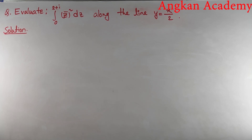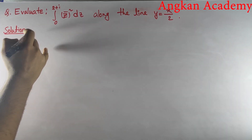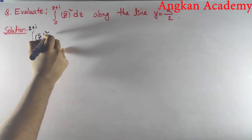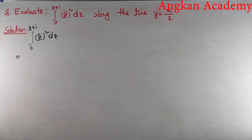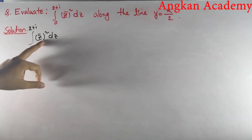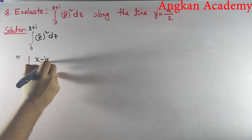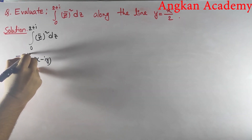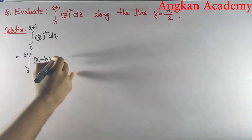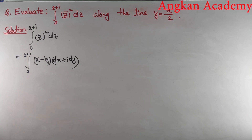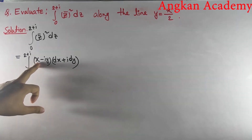Let's evaluate the integral from 0 to 2+i of z̄² dz along the line y = x/2. Here z̄ is the conjugate of z, meaning z̄ = x − iy.